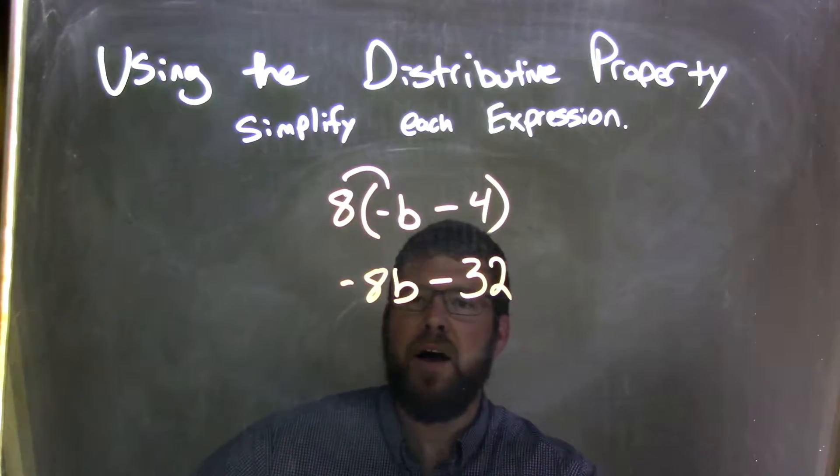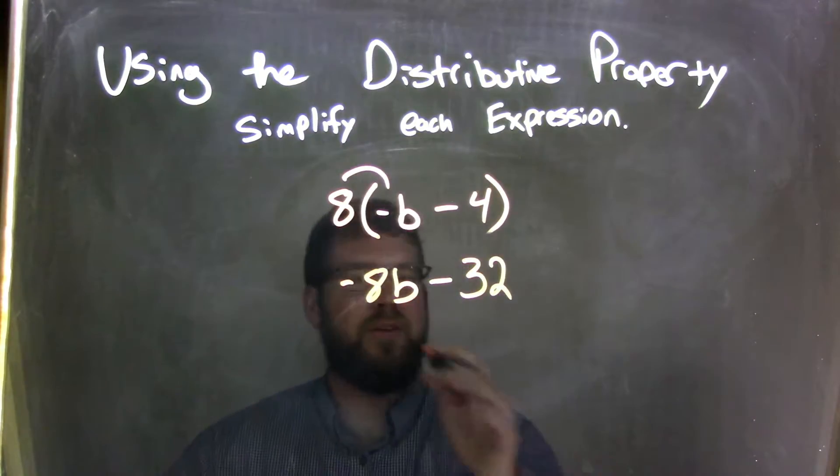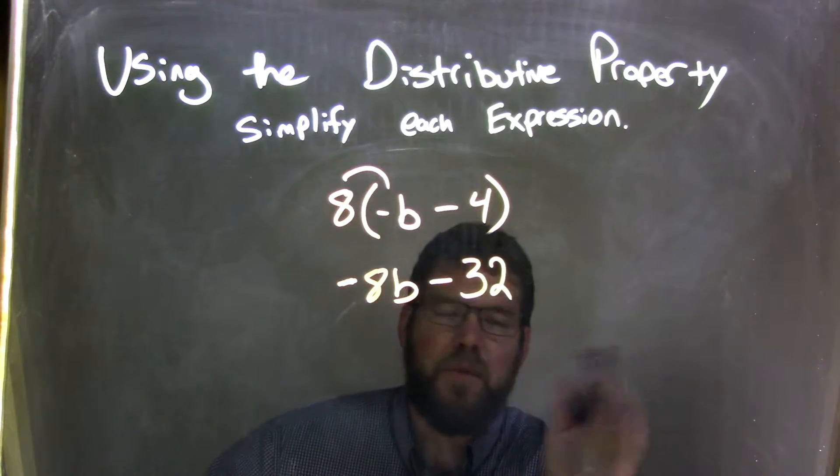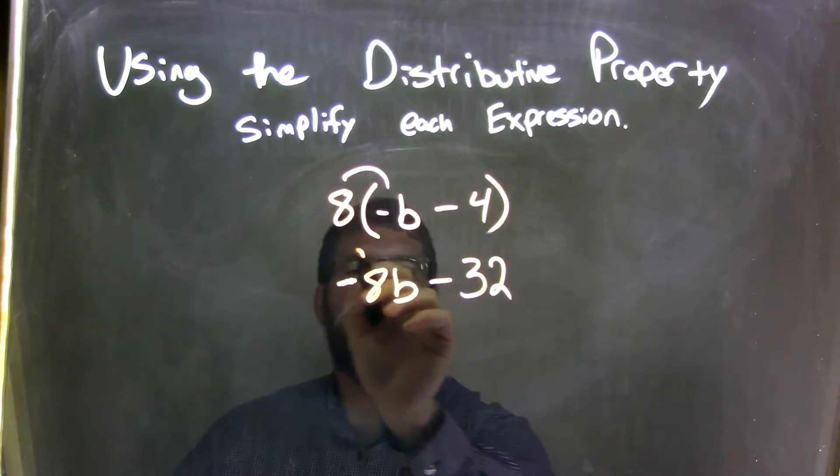We cannot combine these terms because they're not like terms. Negative 8b and 32 are not like terms, so we can't subtract them. That's our final answer.